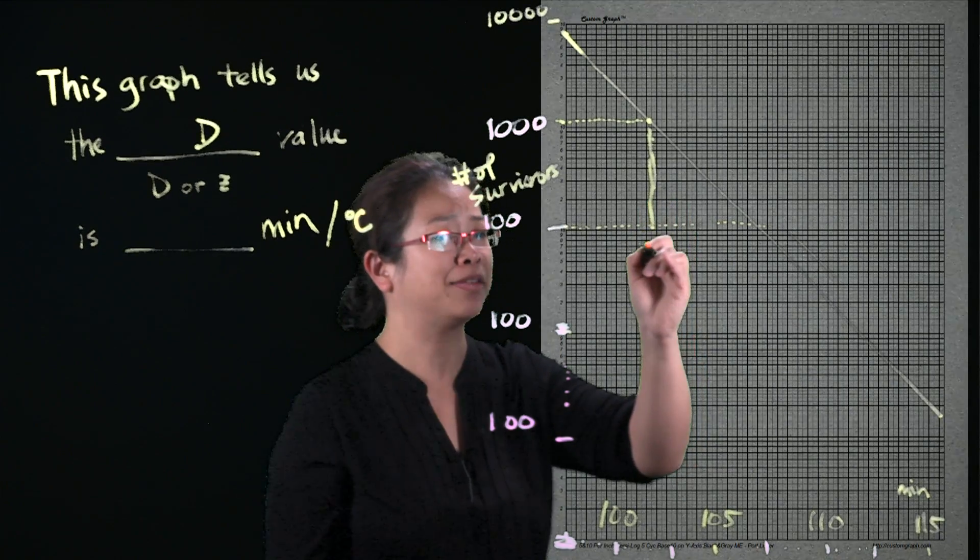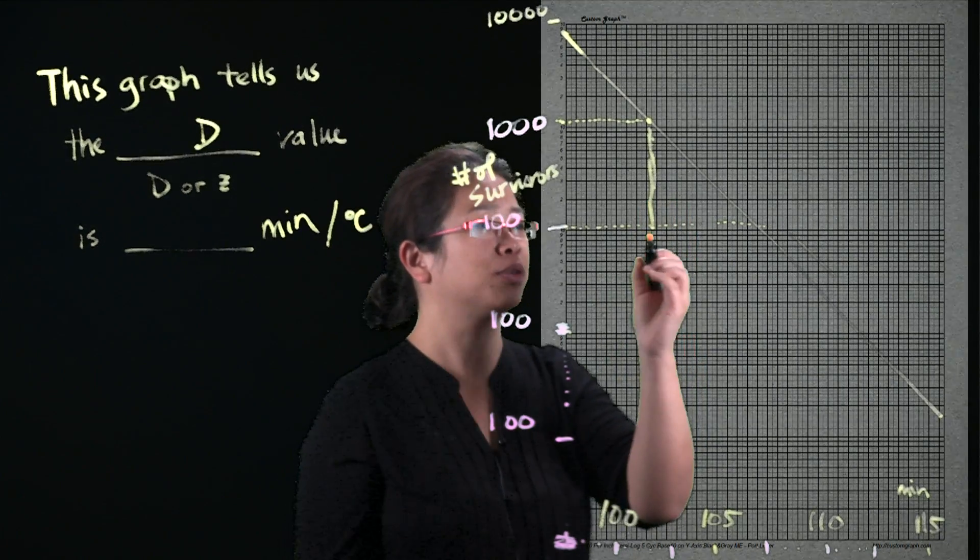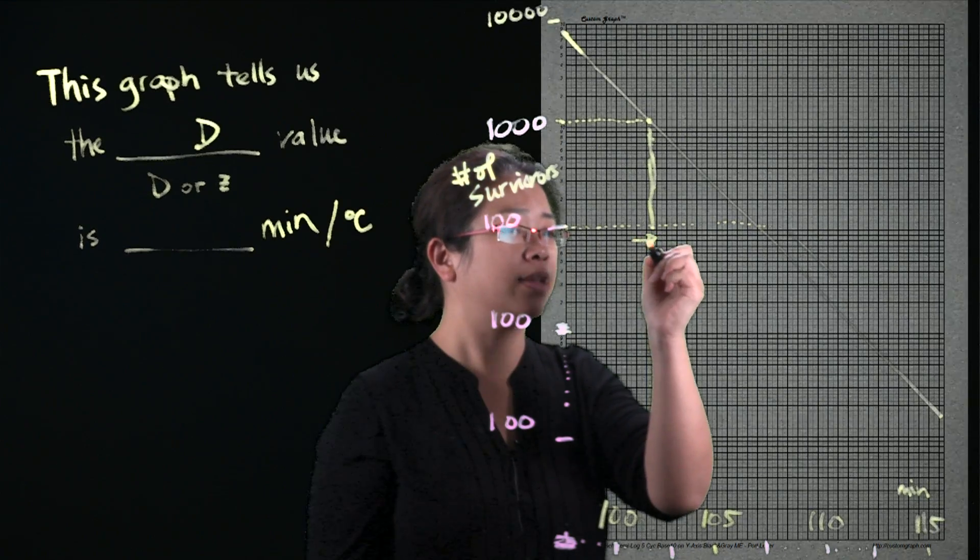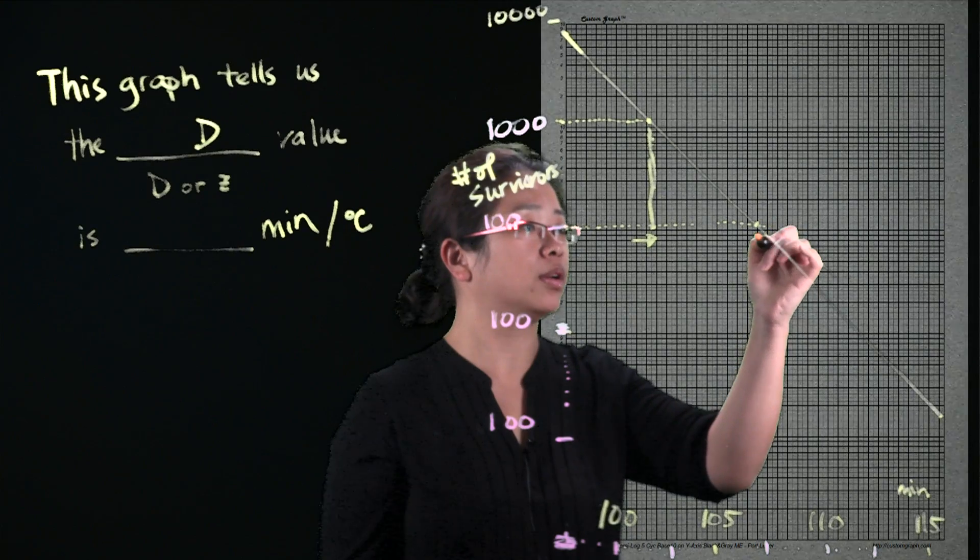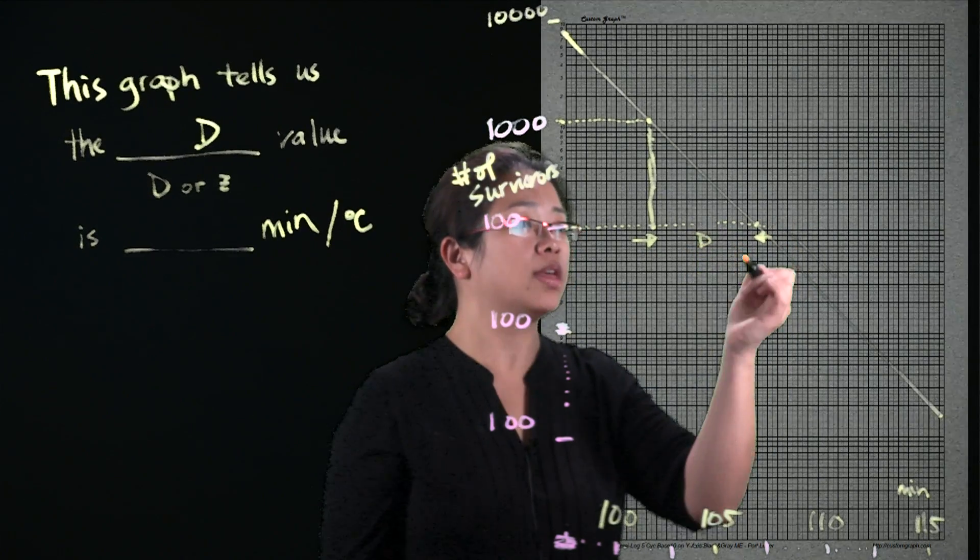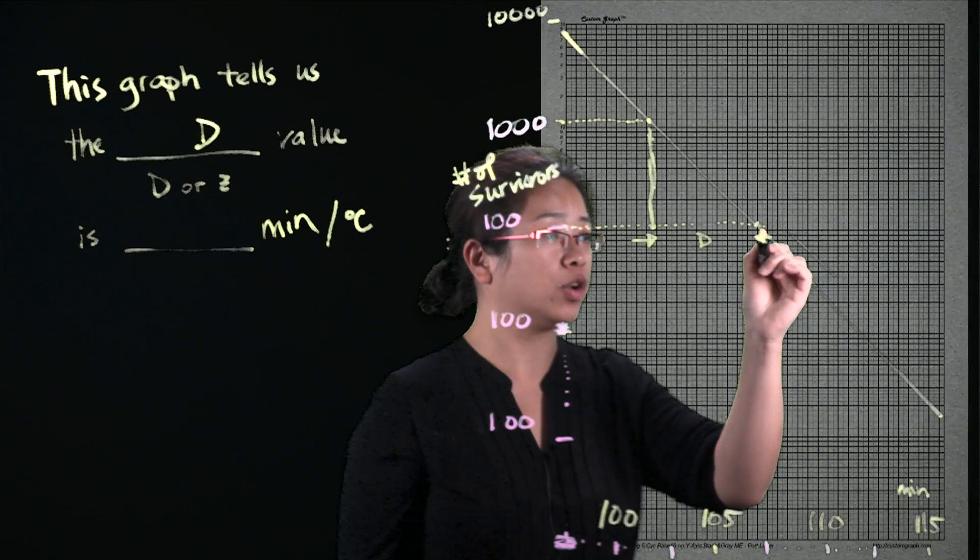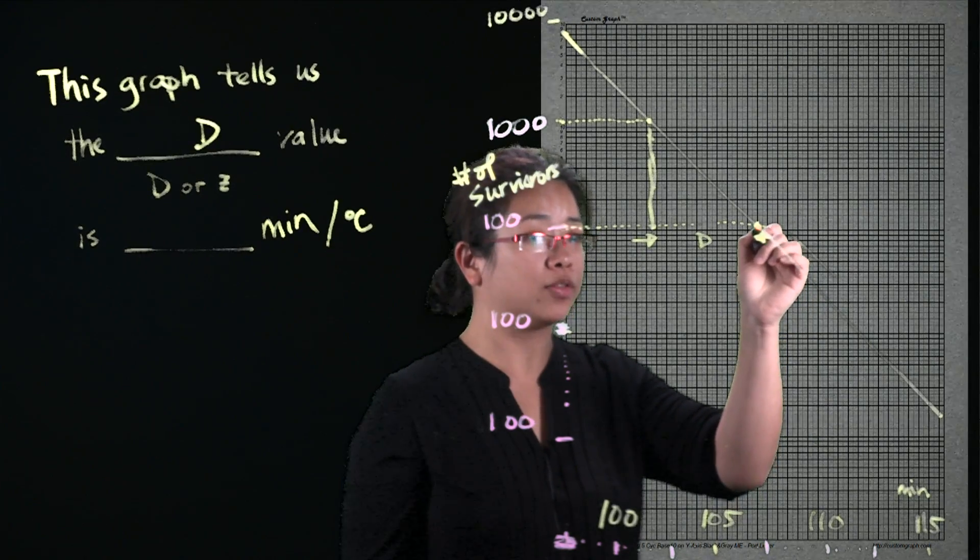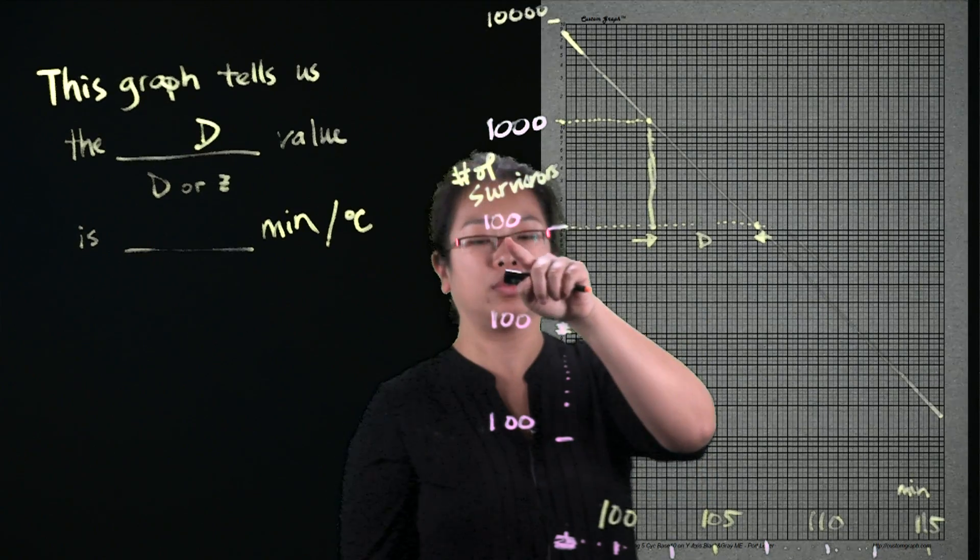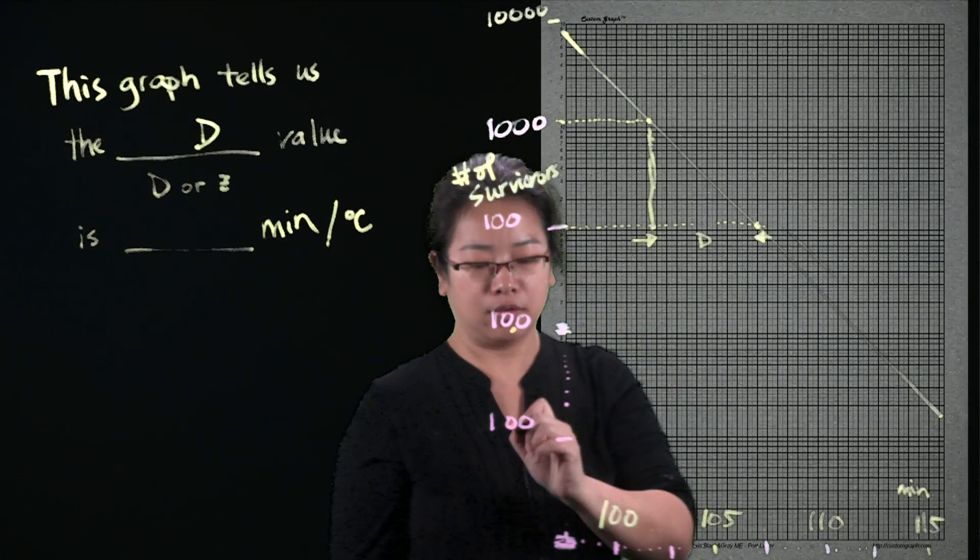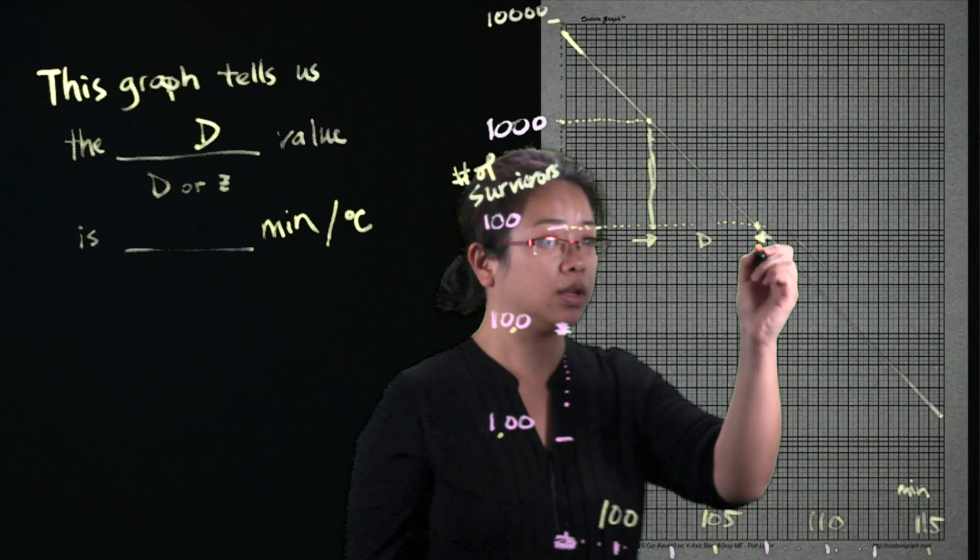So this is a vertical line. Imagine that it is going to be a vertical line. And then this, the time here to the time here is going to be our D value. This D value here will be the same as the one here from 1,000 to 100, from 100 to 10, from 10 to 1. So this is a linear graph.